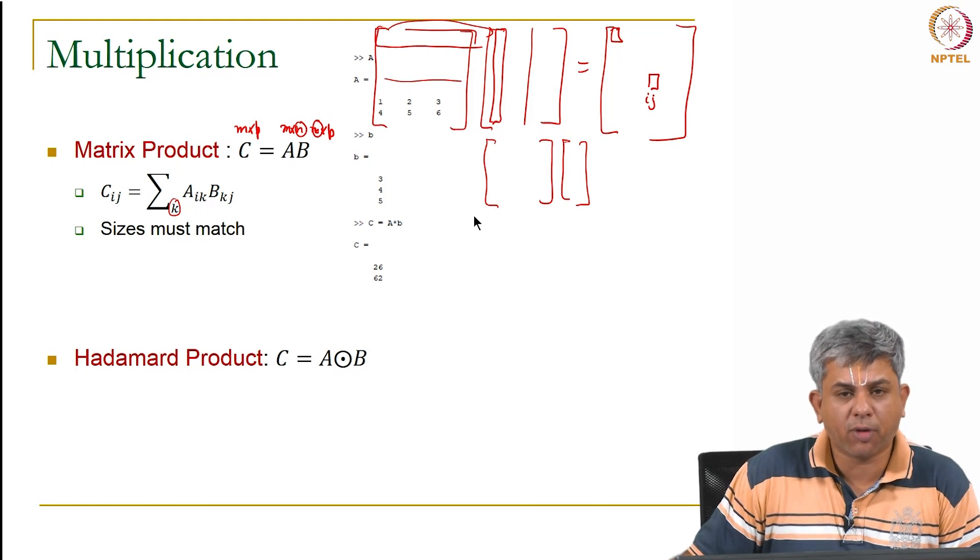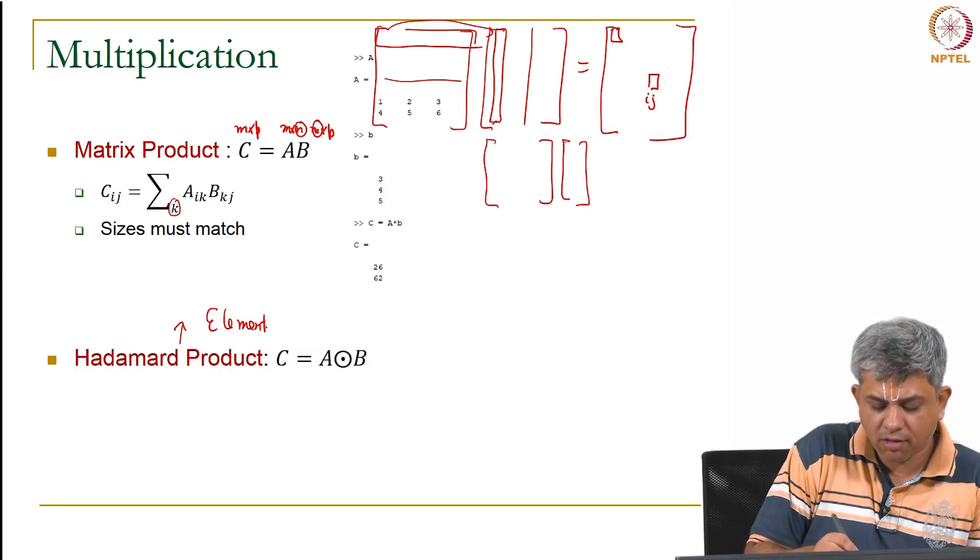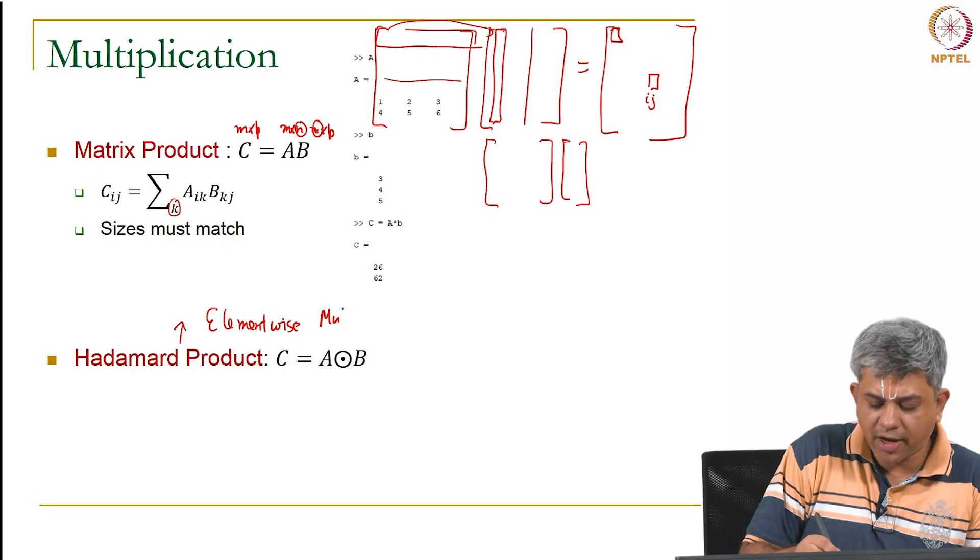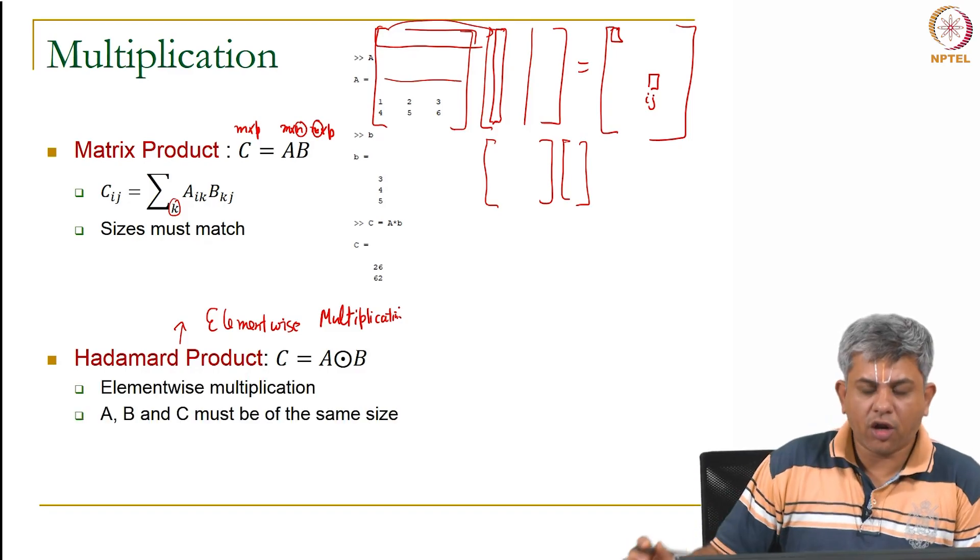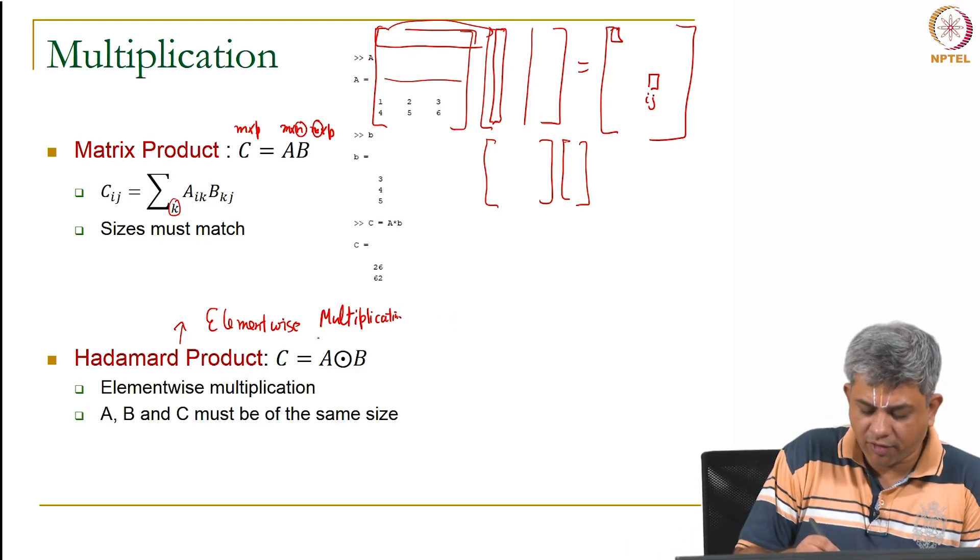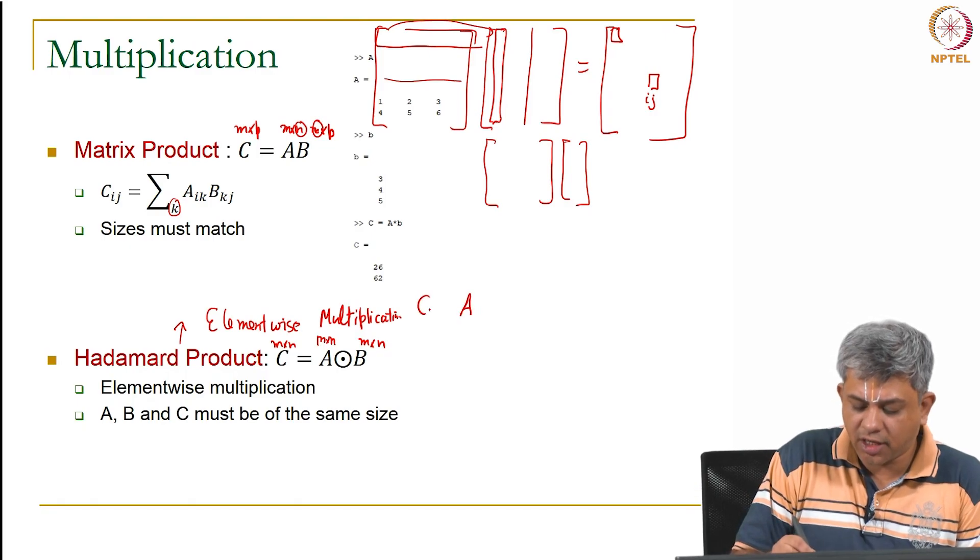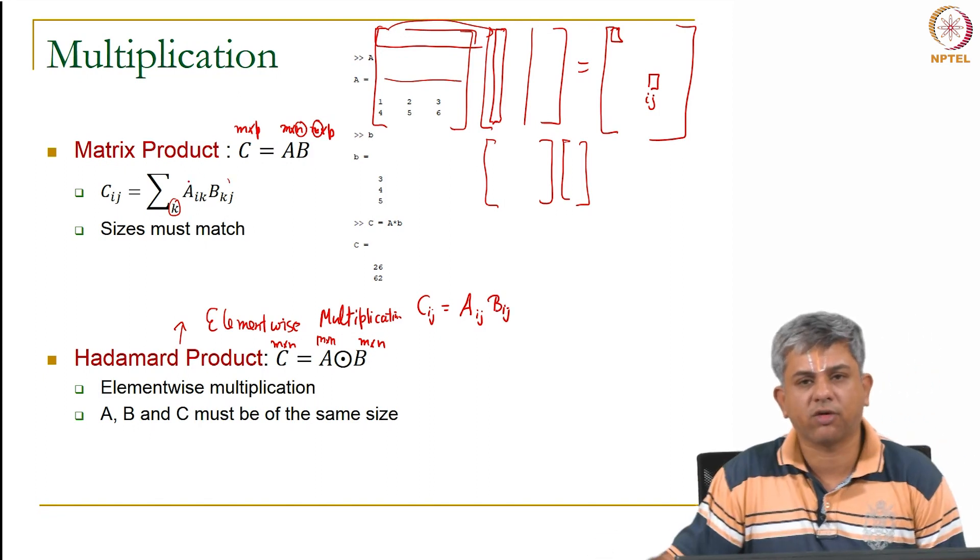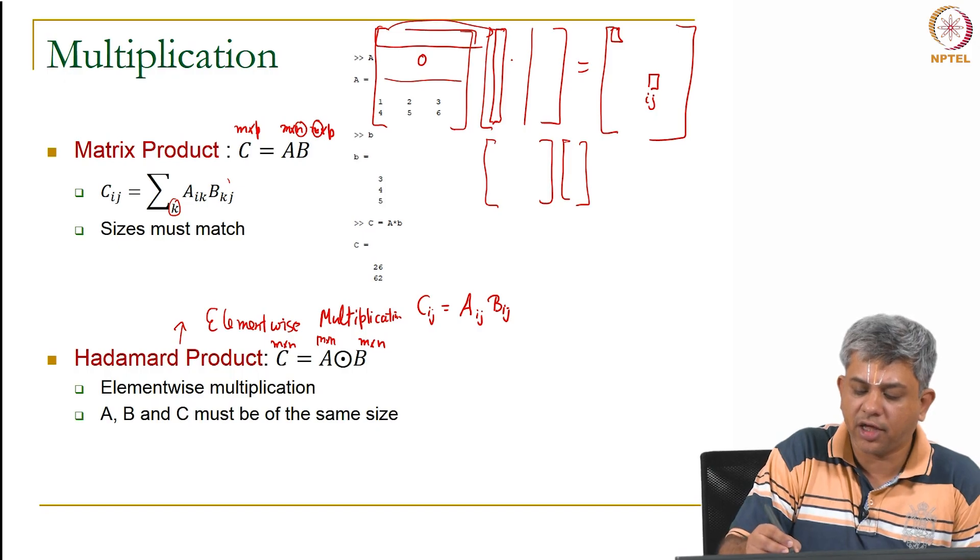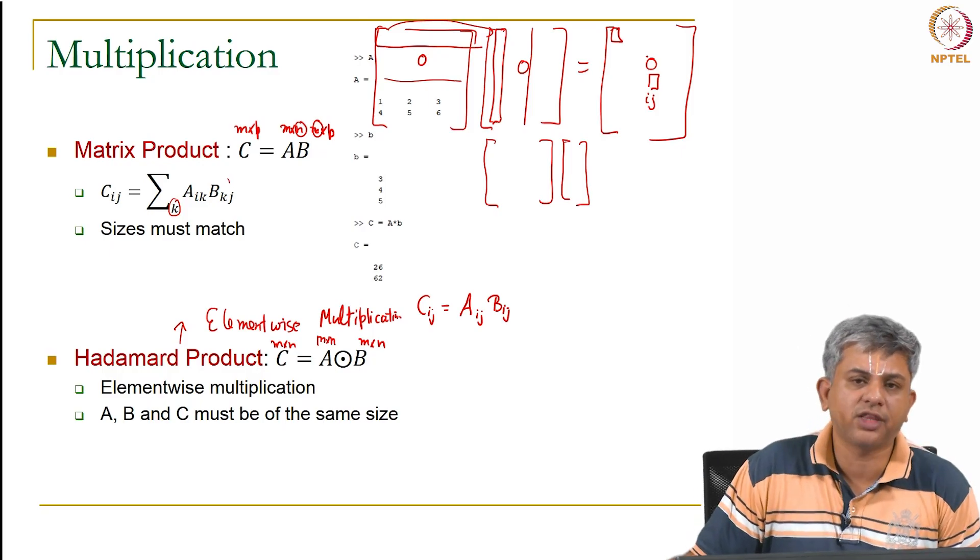You also have something called the Hadamard product. This is simply an element wise multiplication. All we have to do is to say that if A is m cross n and B is m cross n then C is also m cross n. All you are saying is c_ij is equal to a_ij multiplied by b_ij, no summation unlike here. You just take the corresponding element here, take one element here, multiplied and it gives you the corresponding element there. This is analogous to what we did with addition.